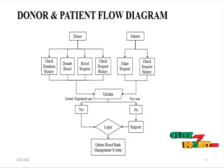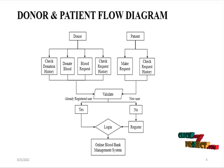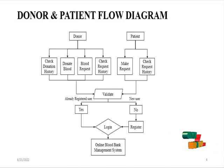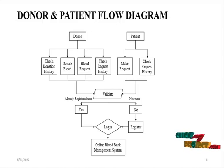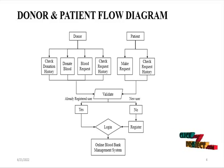In the donor and patient flow diagram, donors and patients must register in the online blood bank management system, and then only they can login into the system. For donors, they can check the donation history, donate blood, and give a blood request to the admin. They can also check the request history. For patients, they can only make a request and check the request.